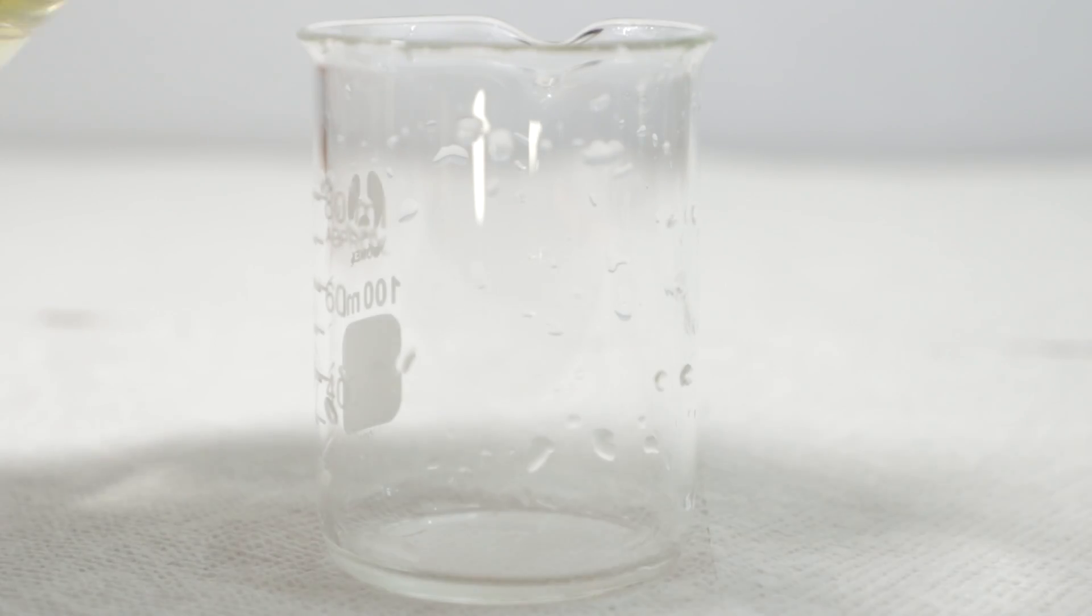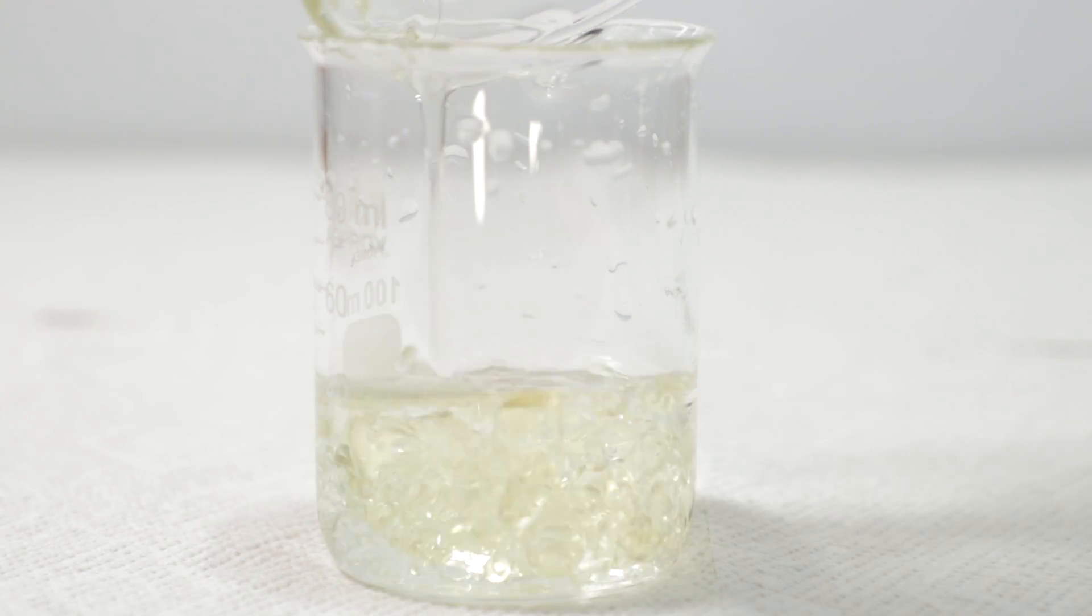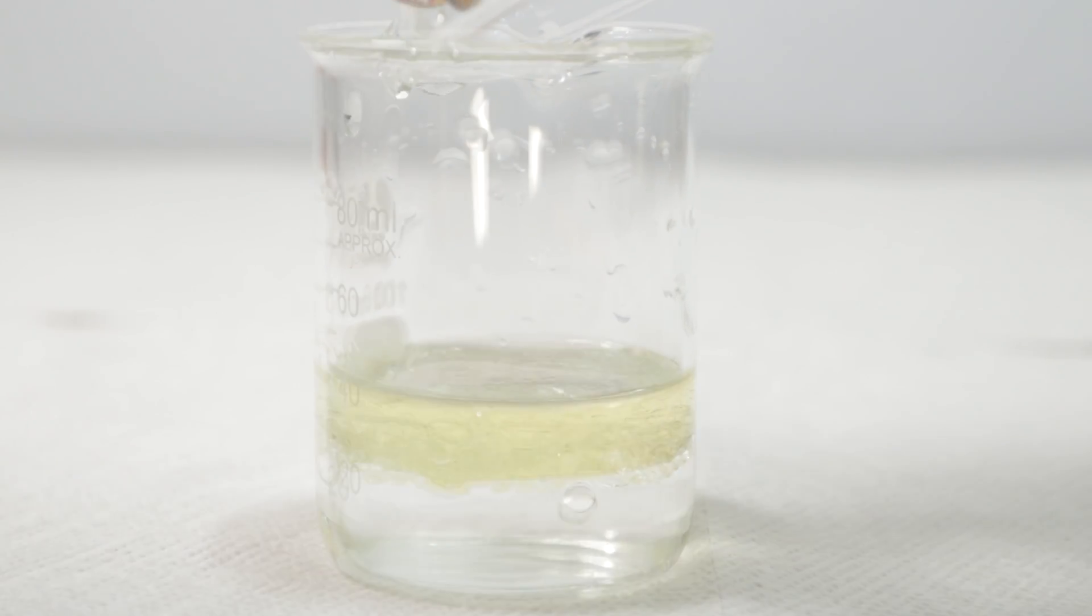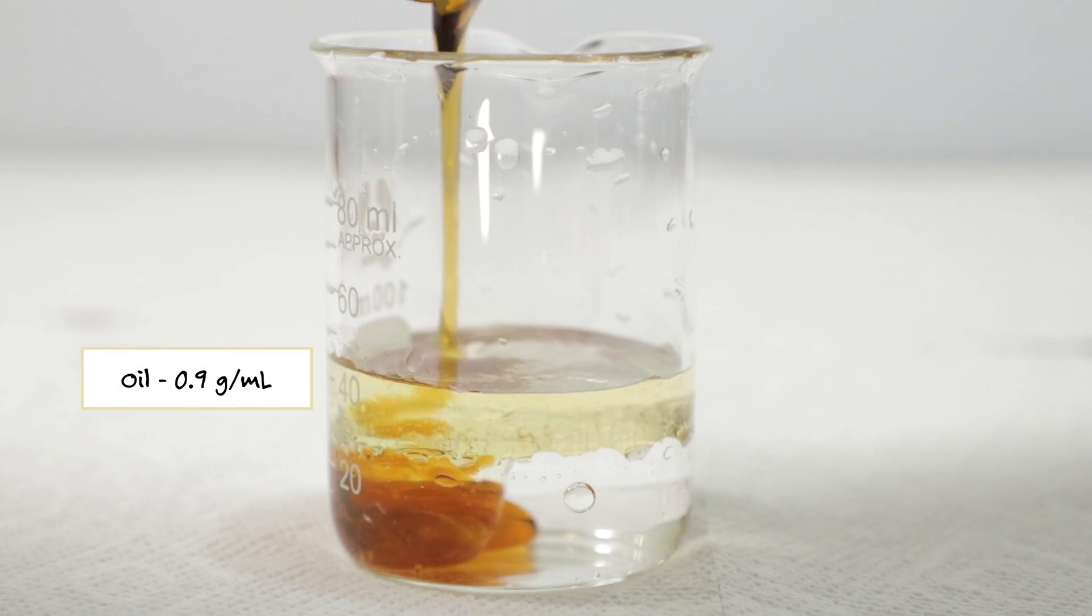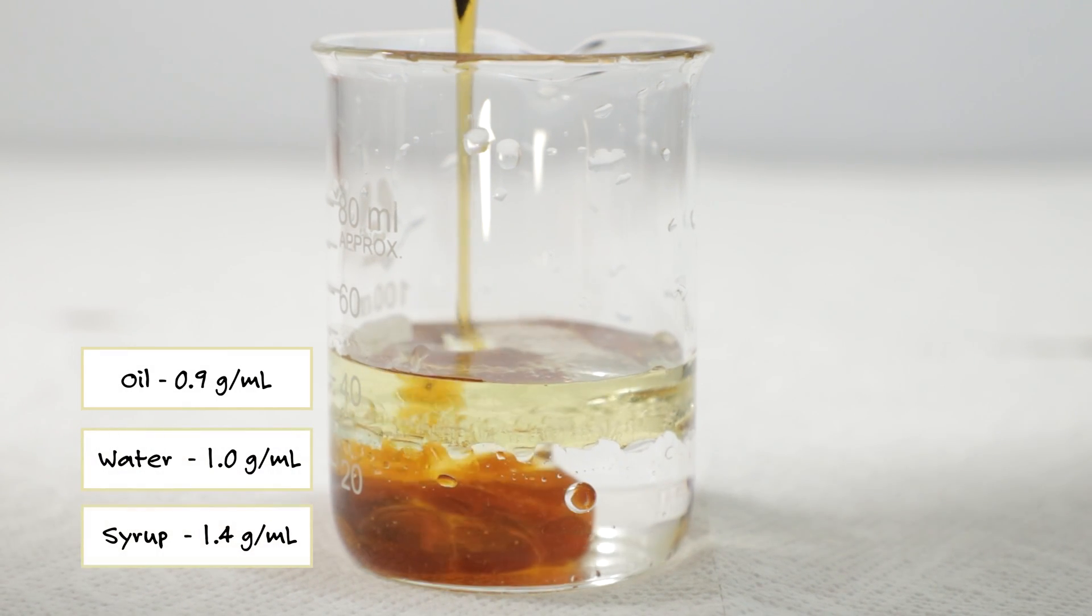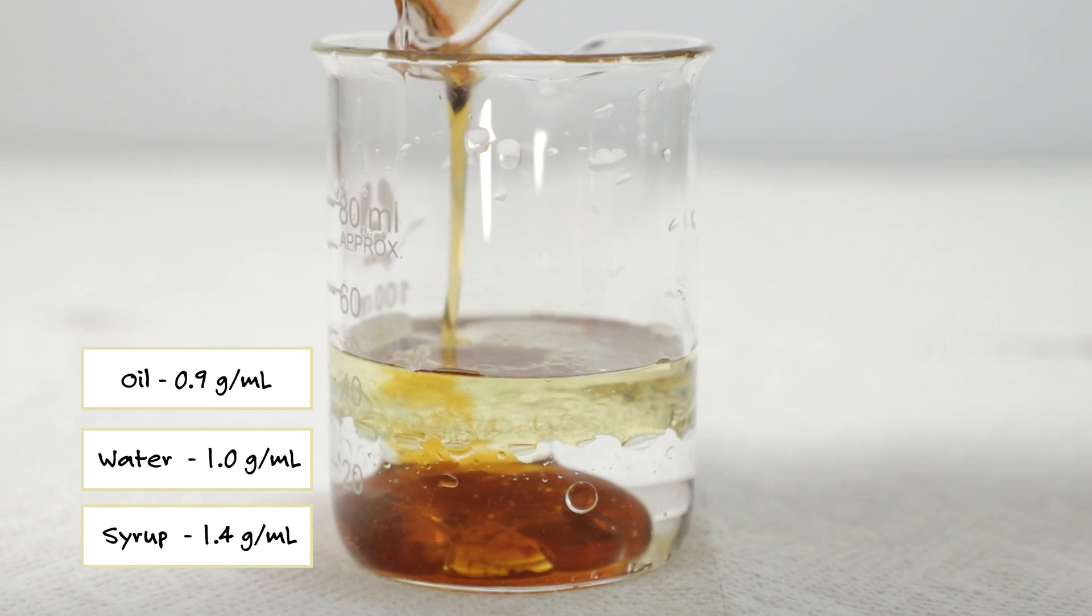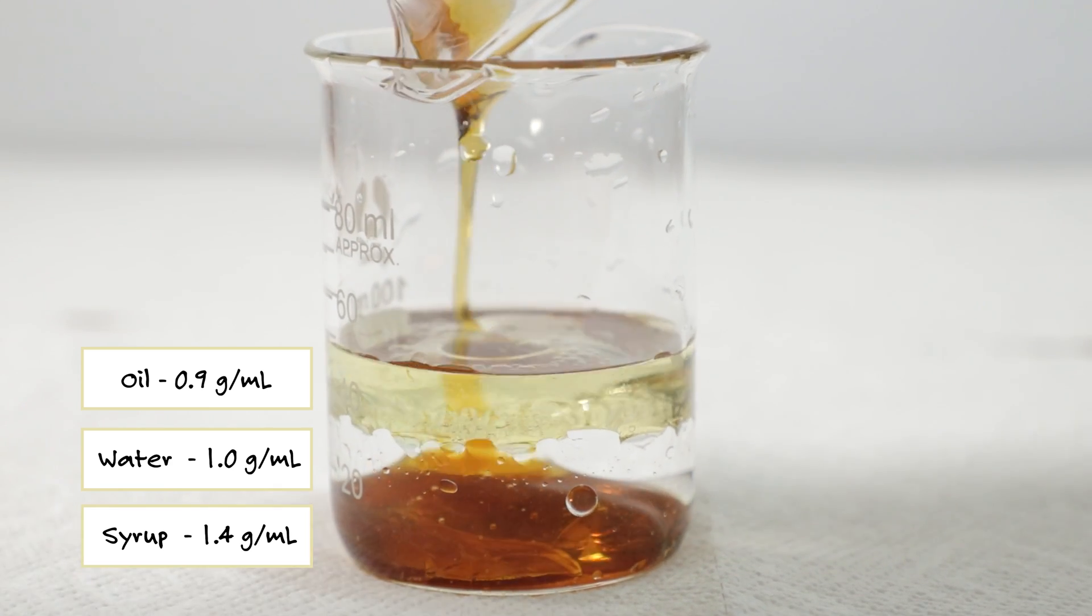Let's pour these different liquids into a glass and see how the different densities affect each other. The least dense substance flows on top followed by the water and corn syrup to the bottom. The least dense substance atoms are unable to press through the denser substances below it.